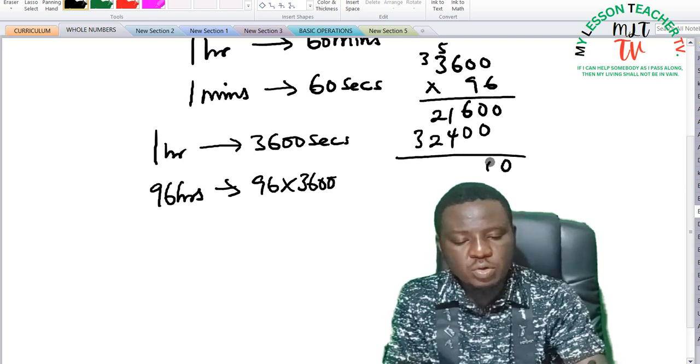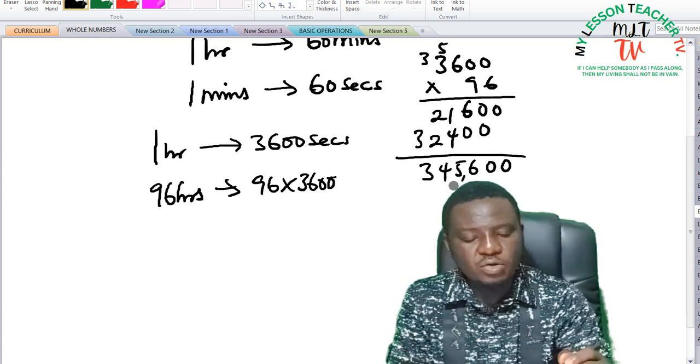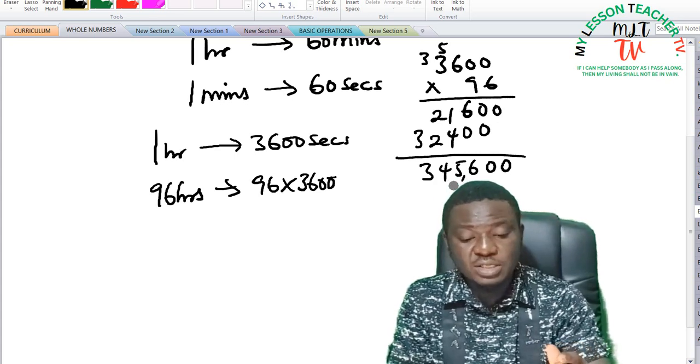9 times 3 is 27. 27 plus 5 is 32. So this is equal to 345,600.